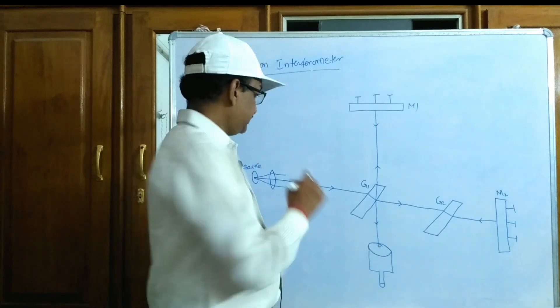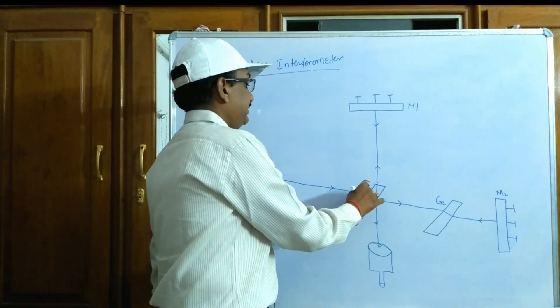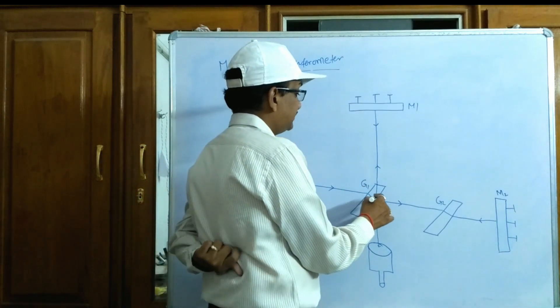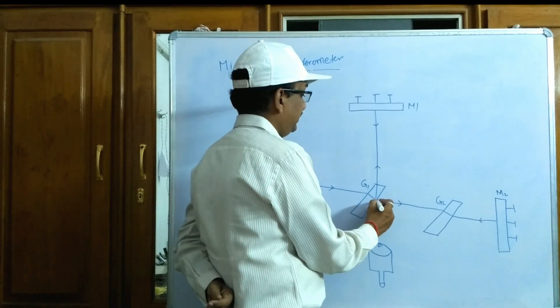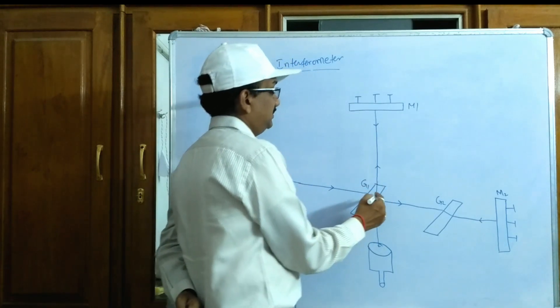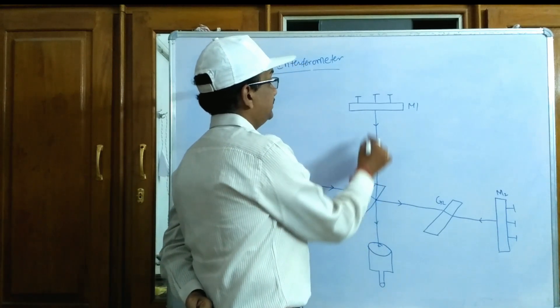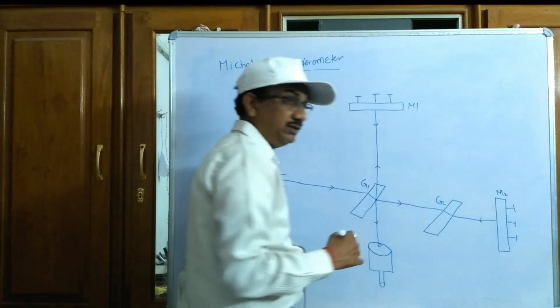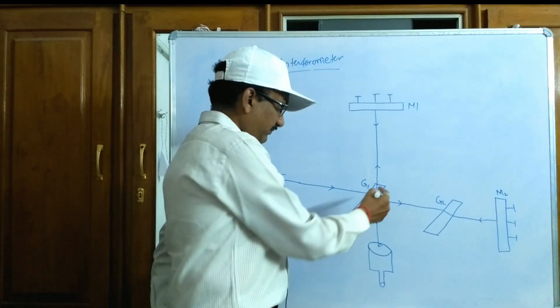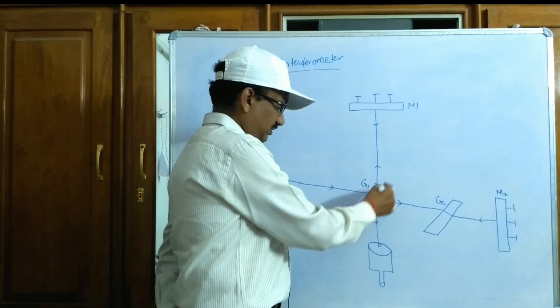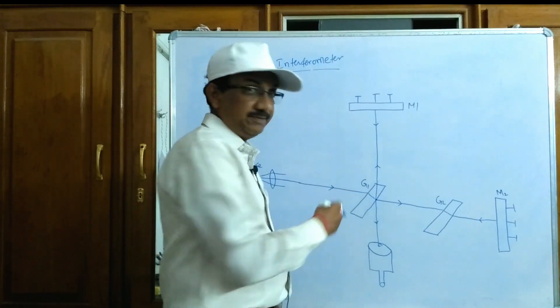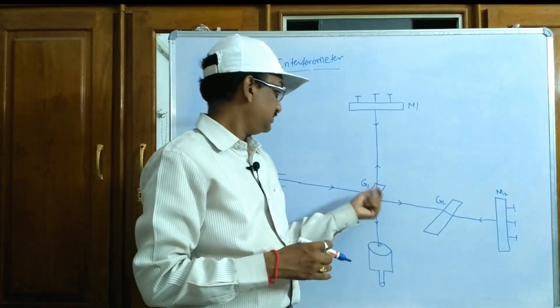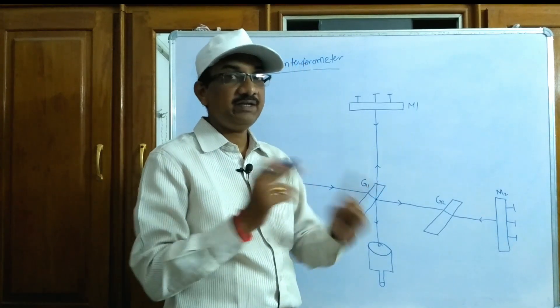Here, the working is, whenever light incidents on the plate G1, this refracts and enters into this plate. Then from at this particular point, one ray reflects towards the mirror M1 and one ray refracts towards the glass plate G2. Before that, we have to apply some coating, a silver coating this side to this material. That is why it can be acted as perfect reflector as well as perfect transmitting.